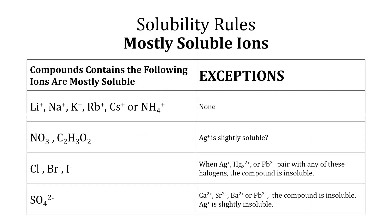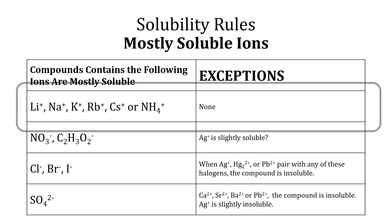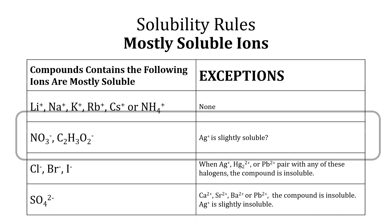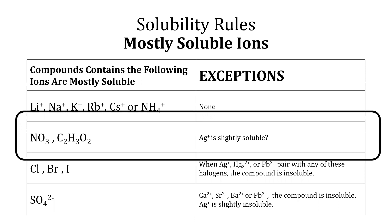This table here shows the ions that are mostly soluble in water. Salts containing alkaline metal ions, including lithium ion and sodium ion, along with the ammonium ion, are soluble in water. Salts containing nitrate ions and acetate ions are soluble in water. The questionable salt is AgC₂H₃O₂ because some authors say it is soluble in water, but others say it is slightly soluble.